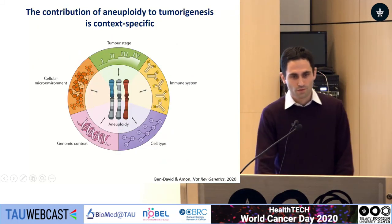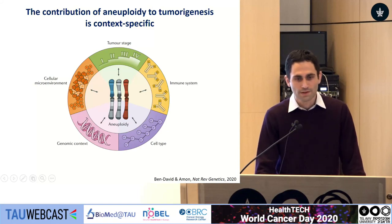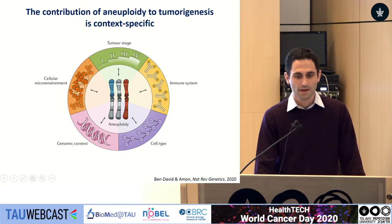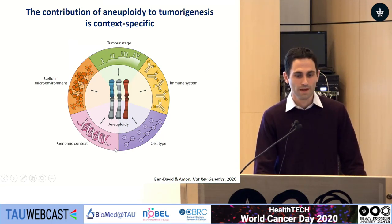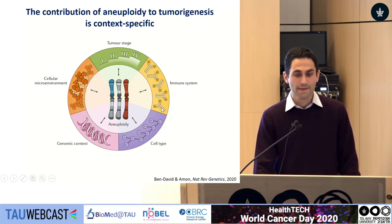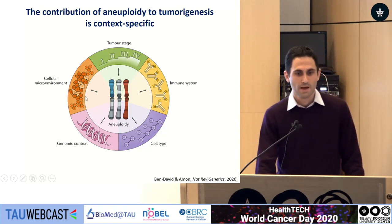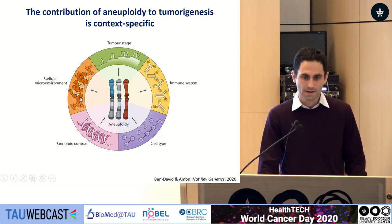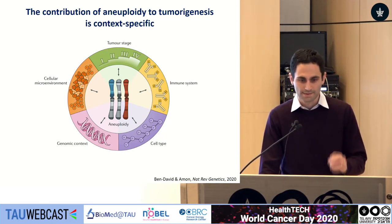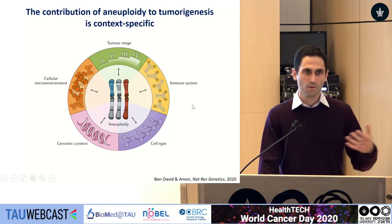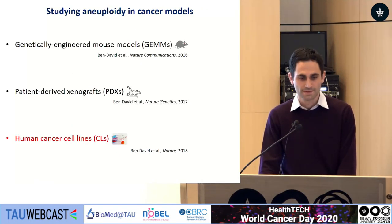This demonstrates a broader point: the contribution of aneuploidy to tumorigenesis is very much context-specific. The genomic context matters — what other genes are mutated — as does the cell type, so different tumor types have different patterns of aneuploidy, the immune system, tumor stage, and cellular microenvironment. When we study the role of aneuploidy in cancer, we have to dissect these and zoom in on specific contexts to make sure our models really mimic what we're interested in studying.